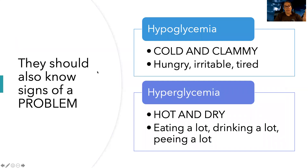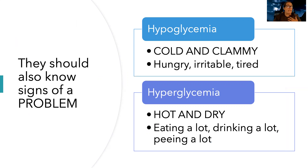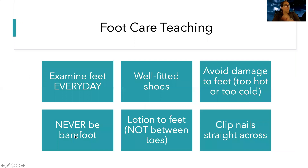Patients need to know the signs of both hypoglycemia and hyperglycemia. For hypoglycemia: cold and clammy, hungry, irritable, tired, diaphoretic, and heart racing — the body stimulates the sympathetic nervous system. For hyperglycemia: hot and dry, eating a lot, drinking a lot, peeing a lot — the polys: polyuria, polydipsia, polyphagia — with blood glucose usually greater than 200 to 250. Low blood glucose is usually less than 70.